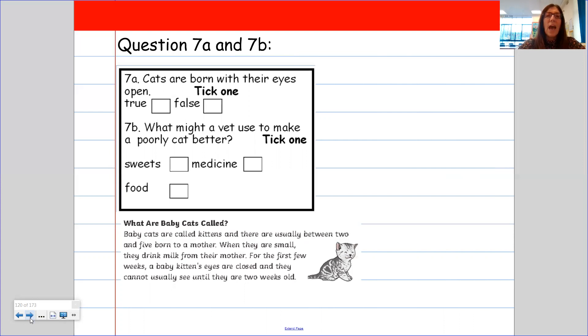And then 7b says, what might a vet use to make a poorly cat better? Now, again, the answer isn't in the text, but you can look at the answers and you can use them to help you work it out. So it says, is it sweets, medicine or food? So a vet would give a kitten some medicine to help it make it feel better.